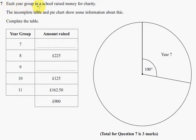Question 7. Each year group in a school raised money for charity. The incomplete table and pie chart show some information about this. Complete the table.